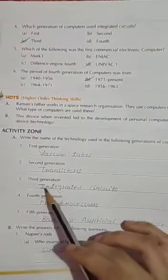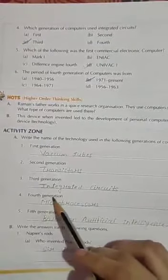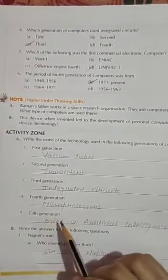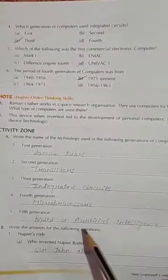Second generation mein transistors. Third generation used integrated circuits. Fourth generation computer, microprocessor. And fifth generation computer was based on artificial intelligence.